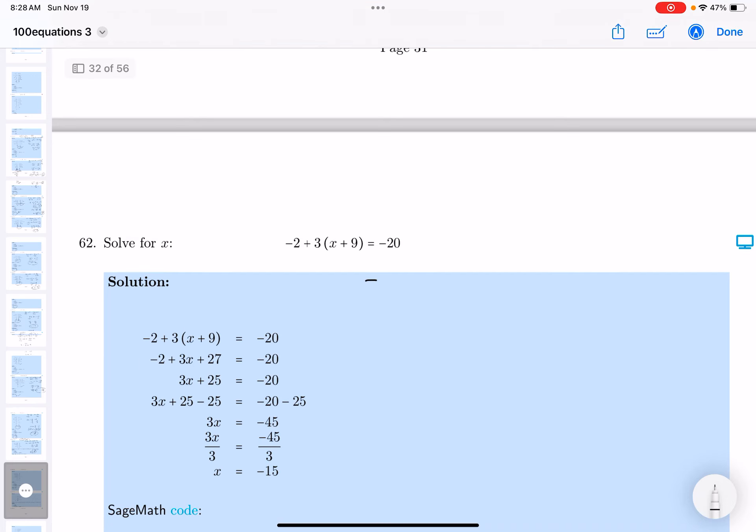Okay, let's start. You got minus 2 plus 3 times (x plus 9) equals minus 20.